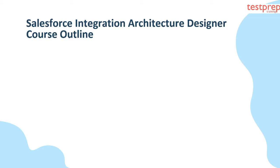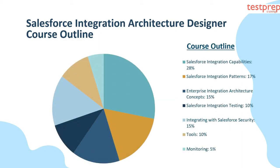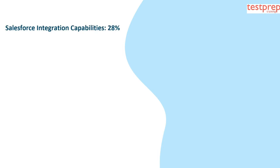The Salesforce Integration Architecture Designer exam measures a candidate's knowledge and skills related to the following objectives. First, Salesforce Integration Capabilities, which comprises 28% weightage. Second, Salesforce Integration Patterns, which comprises 17% weightage. Third, Enterprise Integration Architecture Concepts, which comprises 15% weightage. Fourth, Salesforce Integration Testing, which comprises 10% weightage. Fifth, Integrating with Salesforce Security, which comprises 15% weightage. Sixth, Tools, which comprises 10% weightage. Seventh, Monitoring, which comprises 5% weightage.